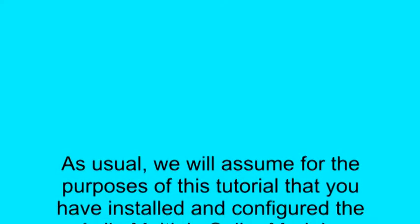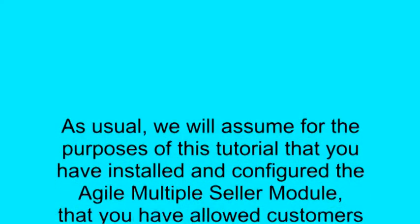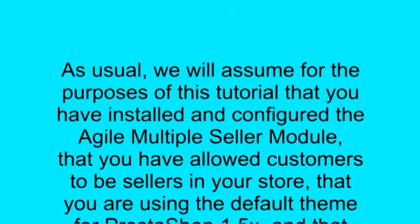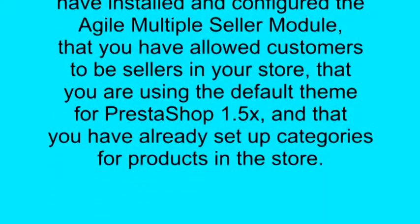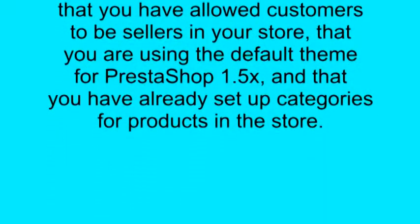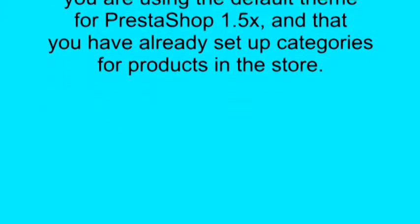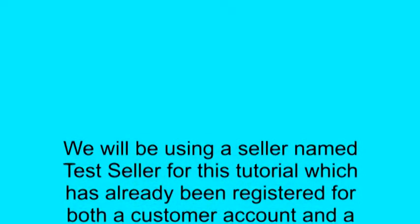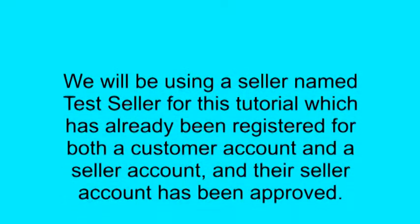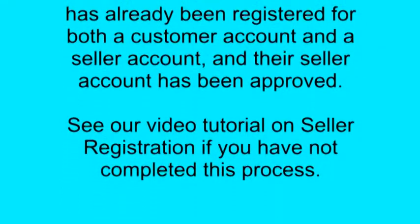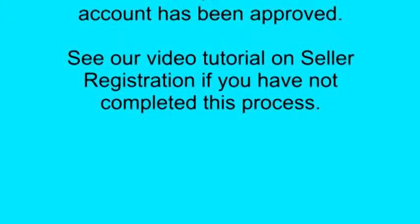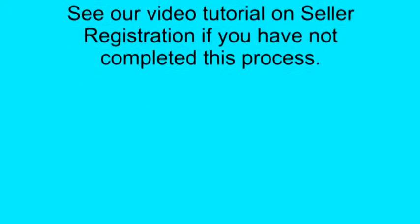As usual, we will assume for the purposes of this tutorial that you have installed and configured the Agile Multiple Seller Module, that you have allowed customers to be sellers in your store, that you are using the default theme for PrestaShop 1.5, and that you have already set up categories for products in the store. We will be using a seller named Test Seller, which has already been registered for both a customer account and a seller account, and their seller account has been approved. See our video tutorial on seller registration if you have not completed this process.